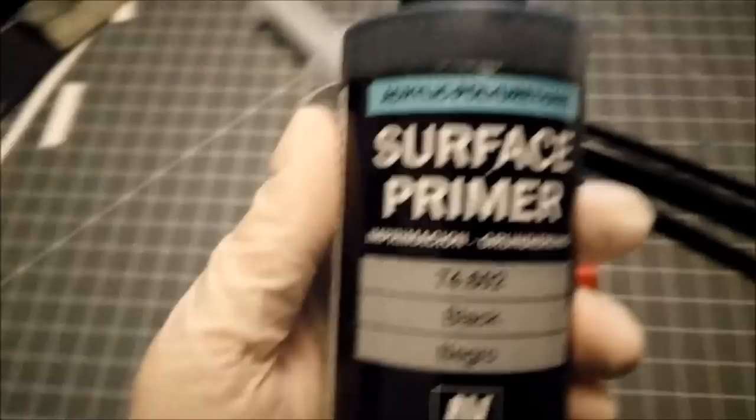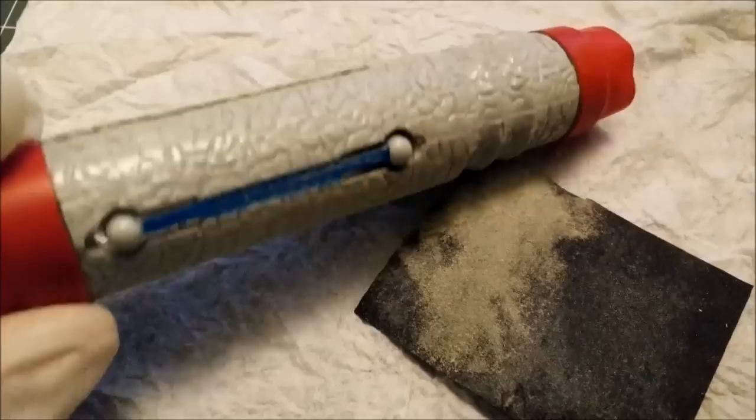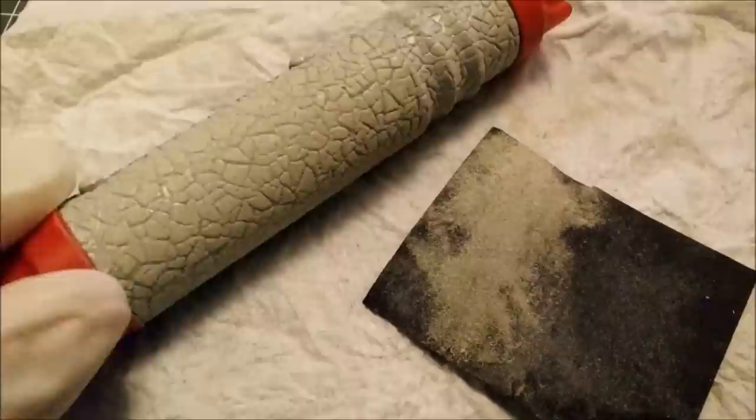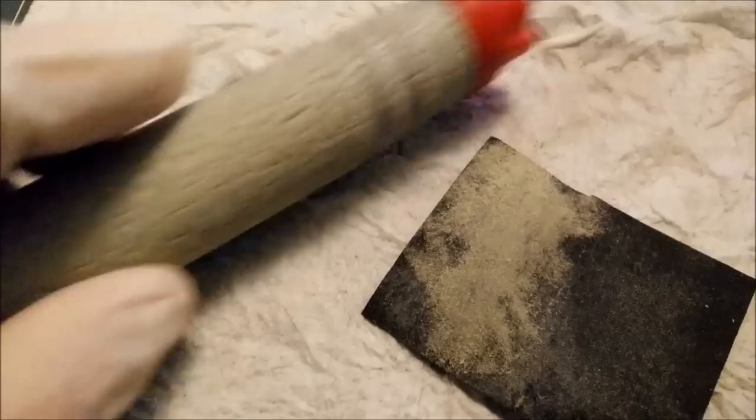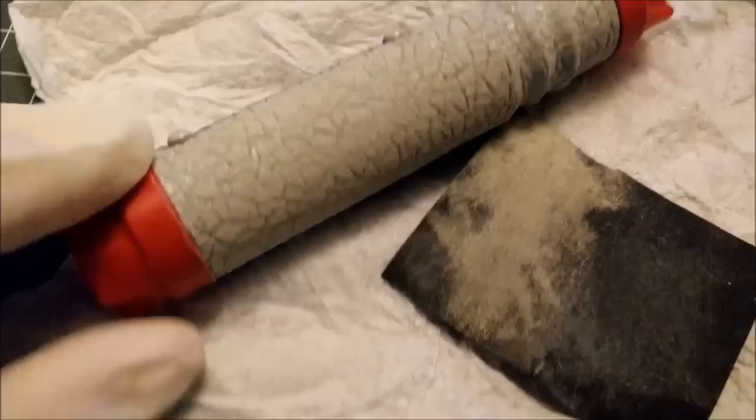You sand down the body a little bit. You see there it's not shiny, there it is shiny. We only want to sand it down so far that the paint can hold on to something and not further. After that you just brush off the dust and you can go and prime it.